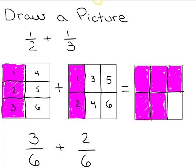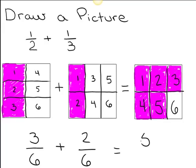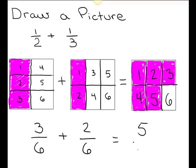Now here I can tell that I have one, two, three, four, five. Five out of six pieces are shaded in. Which means my answer now is going to be five sixths. And that's going to be my final answer.